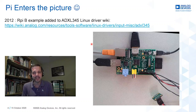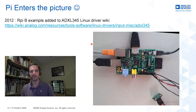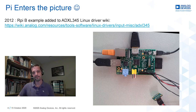When did the Raspberry Pi start to enter the picture? I kept digging and eventually came across an example whose wiki page is dated to 2012 — about eight years ago. I was even playing with the first Raspberry Pi at that time. That example was for the ADXL345 accelerometer — the first instance I could find where a Raspberry Pi was used to show off an ADI device.